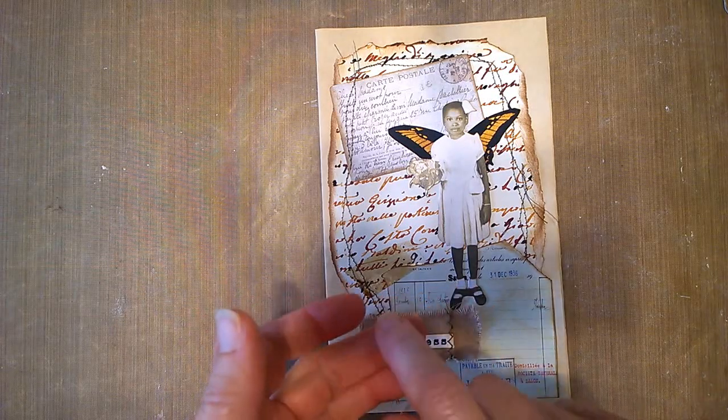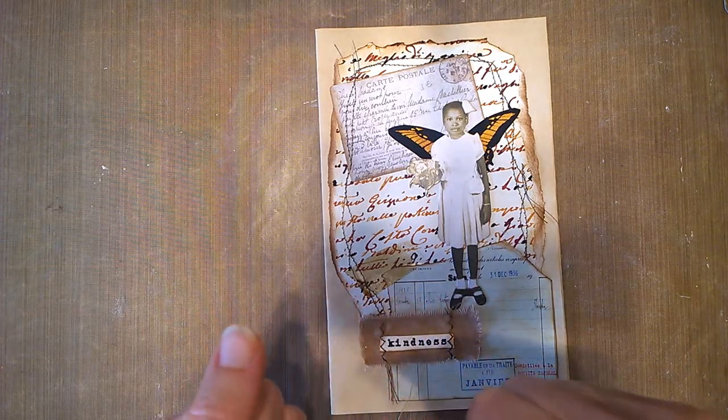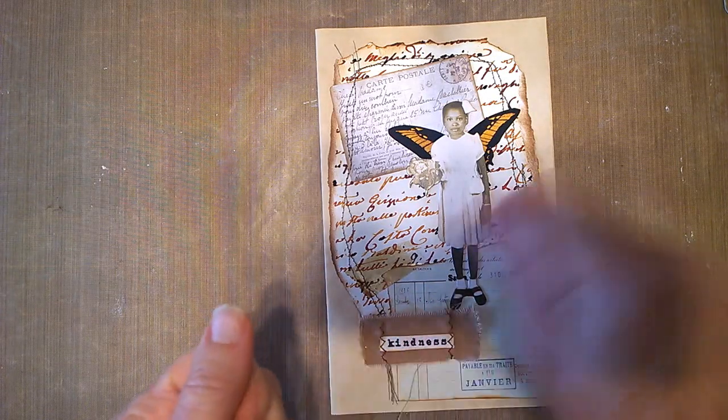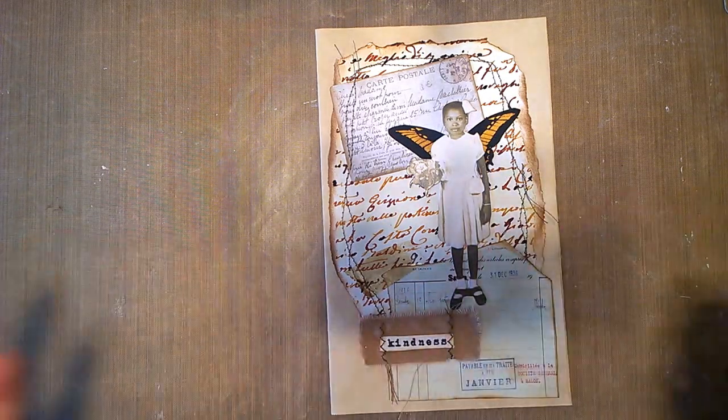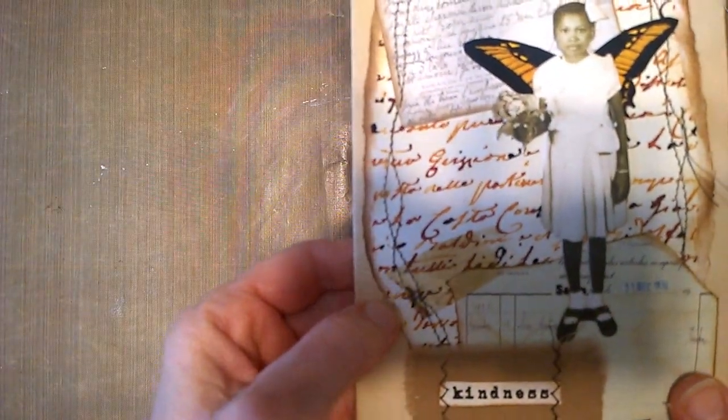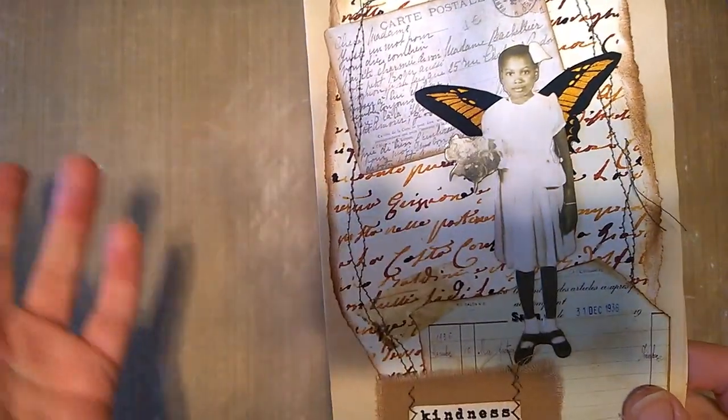And then you just take a sponge and take your distress inks. It needs to be the inks because that's what will really stain it. And you just rub over it and voila. So that's been kind of fun to have those, to put in there randomly.